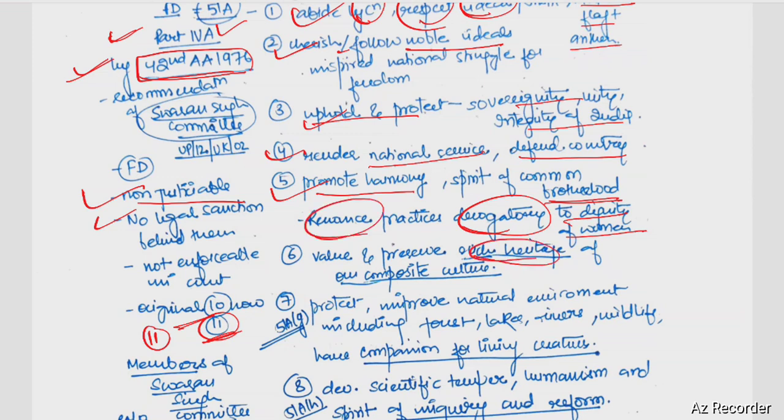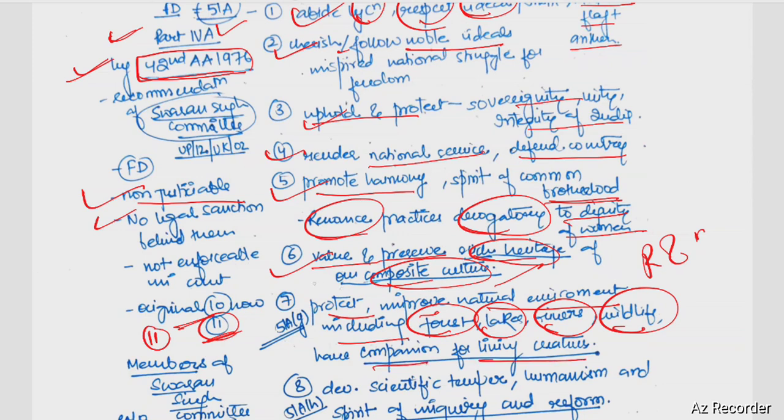Value and preserve rich heritage and composite culture. Protect and improve natural environment including forests, lakes, rivers, wildlife. Have compassion for living creatures. We protected and preserved non-living, now we protect natural environment, forests, lakes, rivers and living creatures.